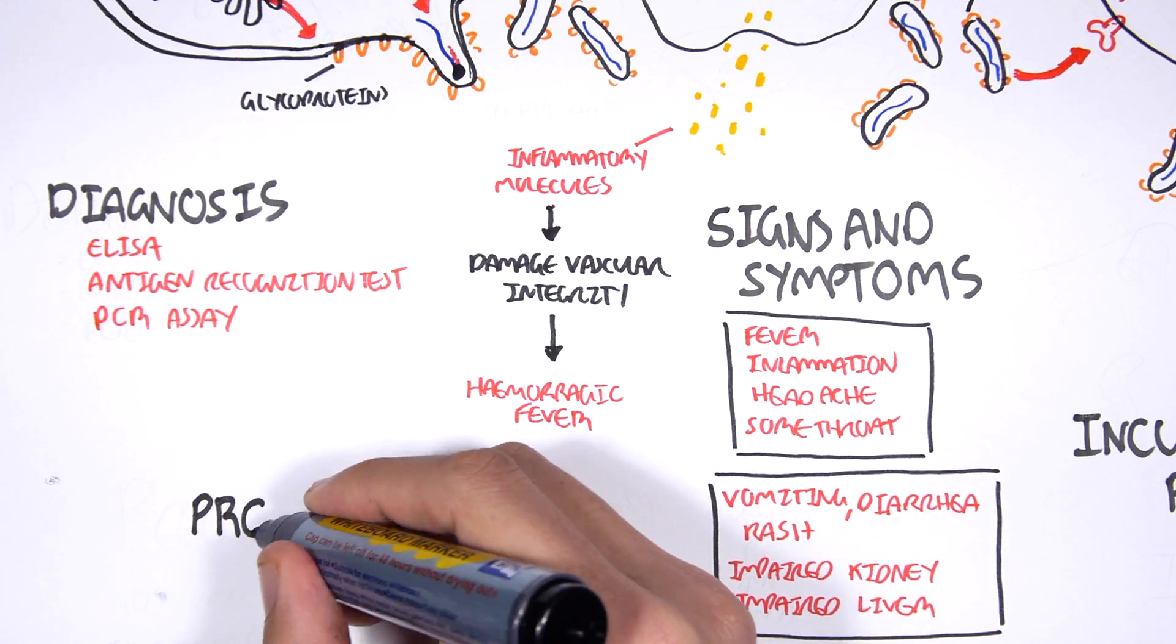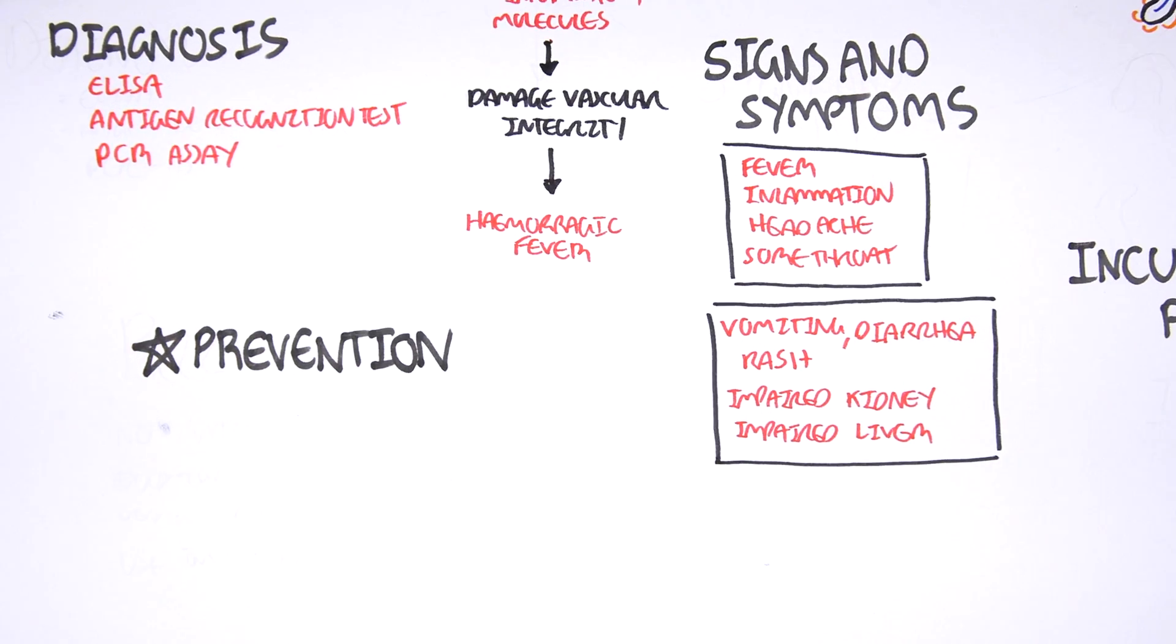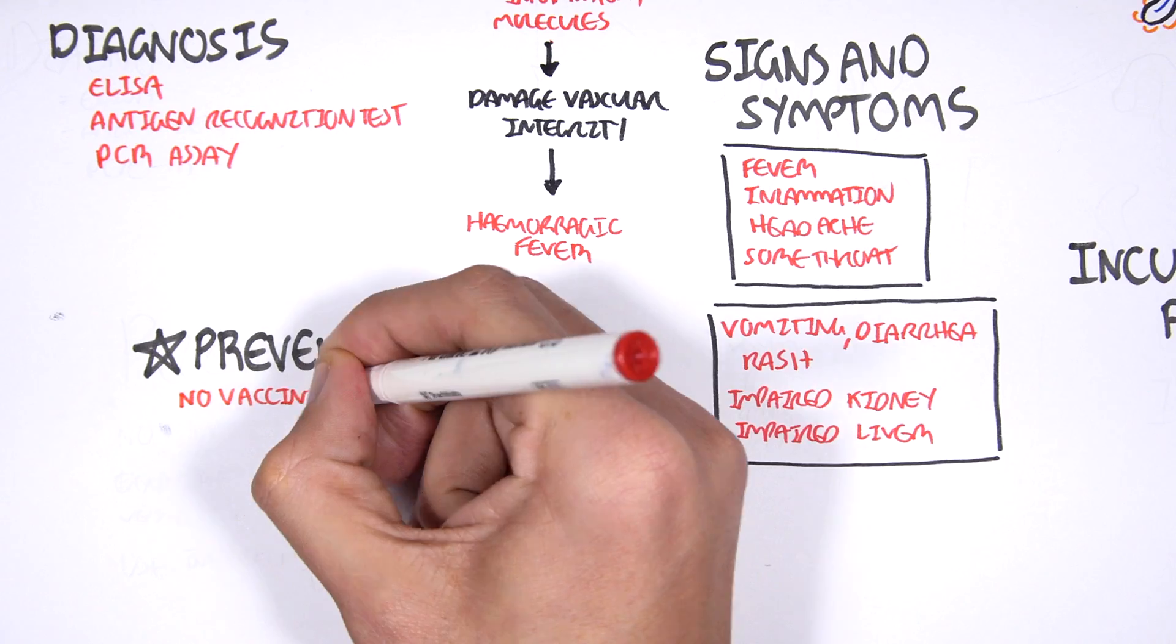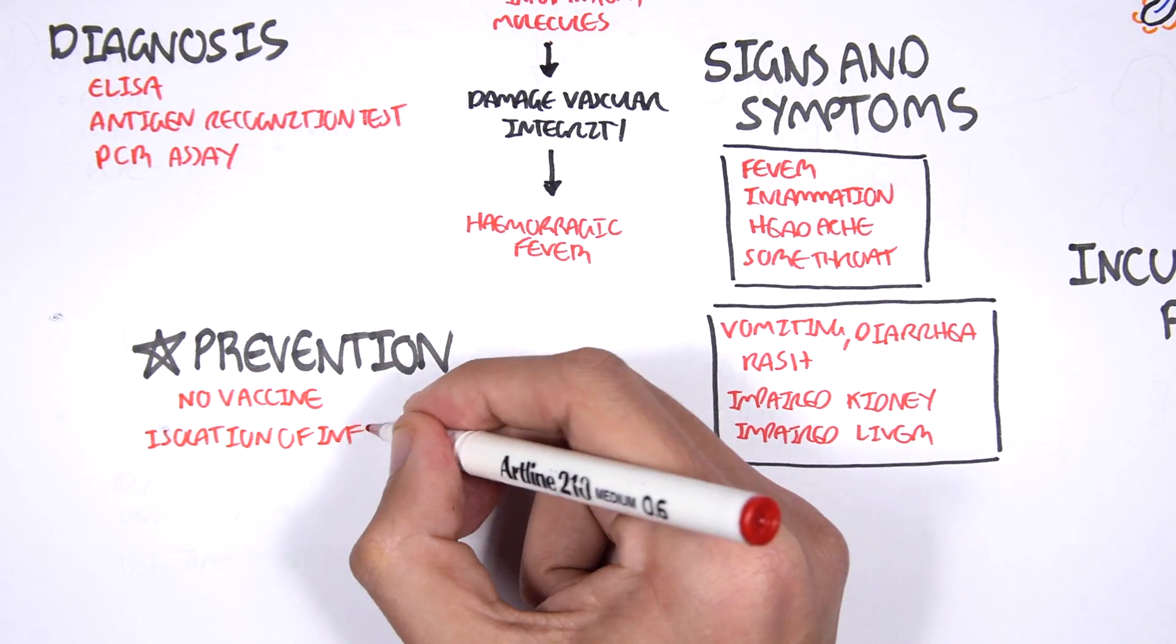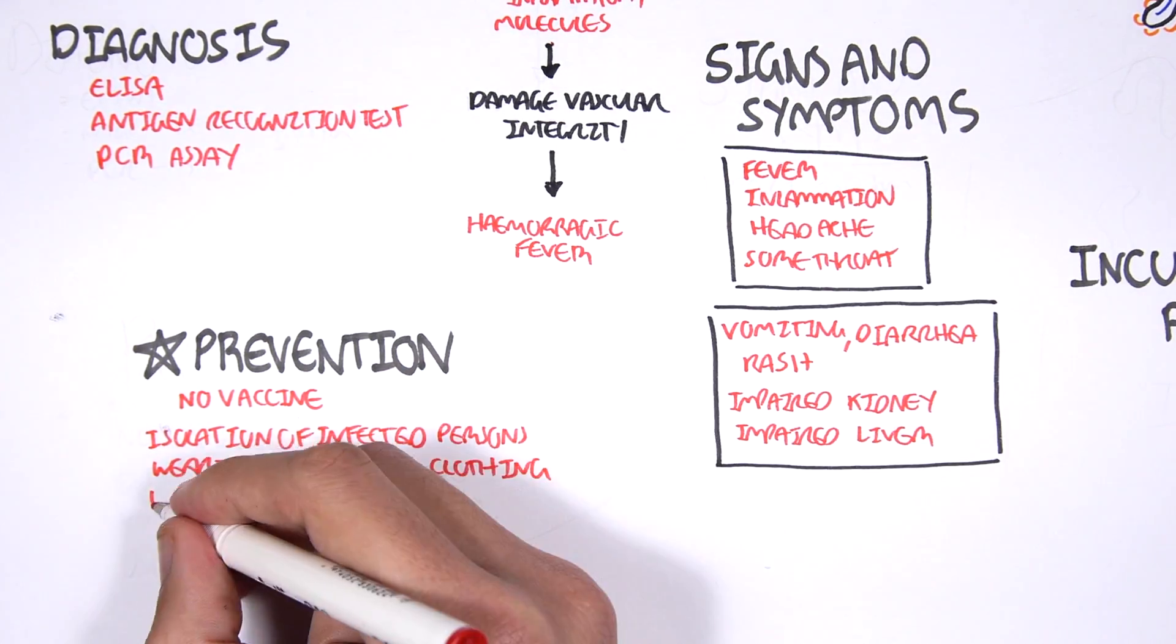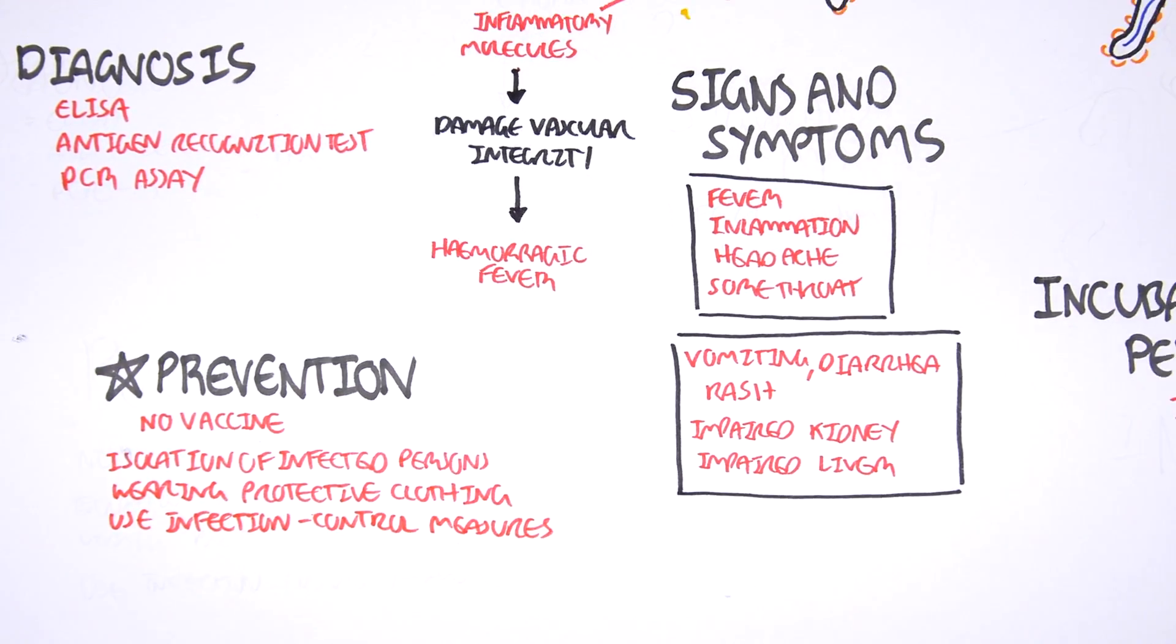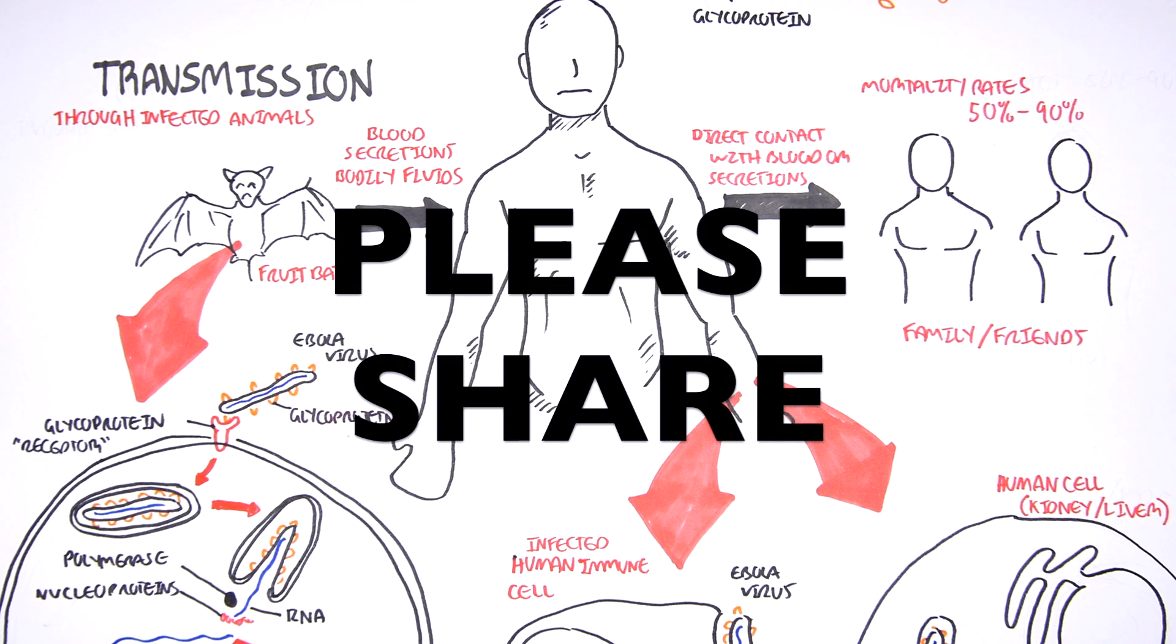Prevention is and will always be the most important aspect when dealing with infections. Unfortunately, there is no licensed vaccine for Ebola viruses currently. Isolation of infected persons, wearing protective clothing, and using infection control measures are the most important things in reducing the spread of Ebola virus disease.